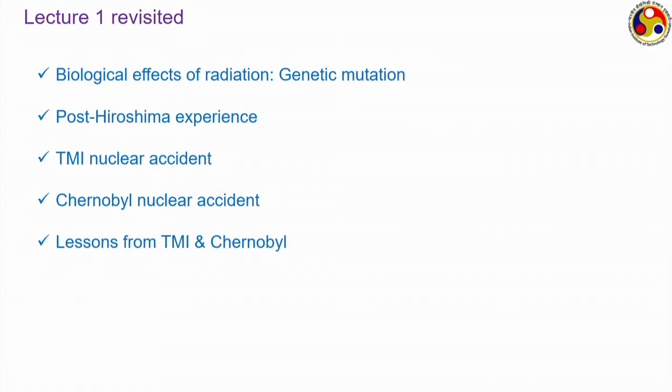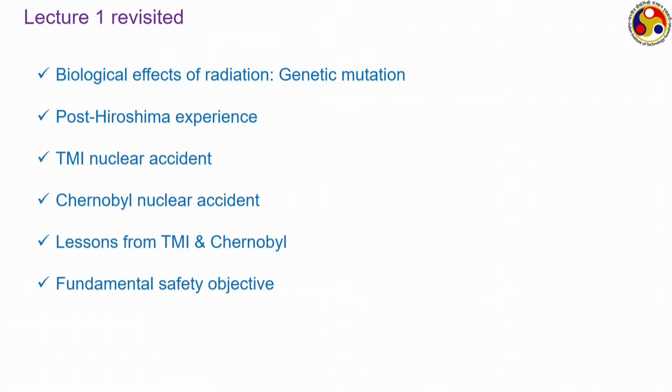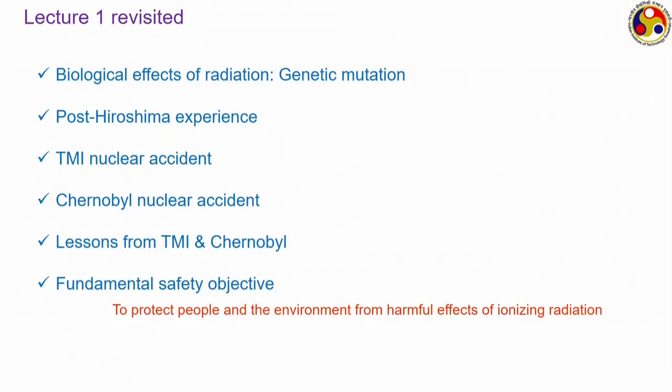By analyzing lessons from TMI, Chernobyl, and the more recent Fukushima Daiichi incident, we have arrived at newer safety guidelines. The fundamental safety objective was identified as: to protect people and the environment from harmful effects of ionizing radiation — ensuring that fission products never come into free contact with the environment or human beings.